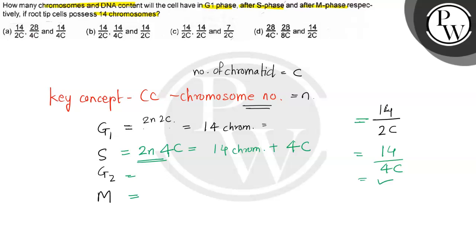In M stage, it will remain 14 by 4C. But when the M stage is finished, the mitotic division is finished, it again goes back to this kind of number. So at the end again,